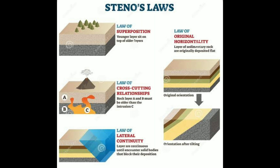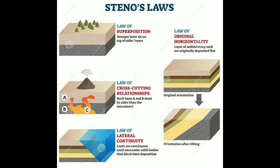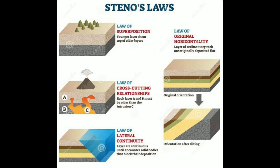The law of original horizontality states that layers of sedimentary rock are originally deposited flat — this is the original orientation — whereas the other orientation represents what occurs after tilting or folding of the surface.